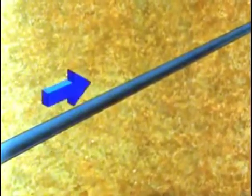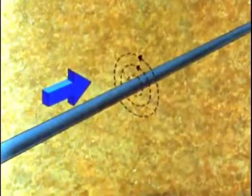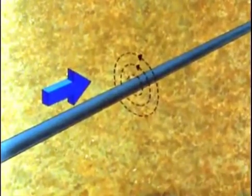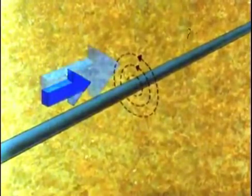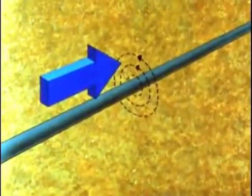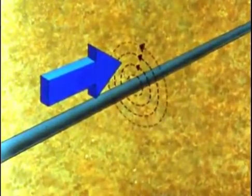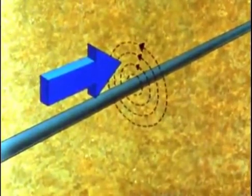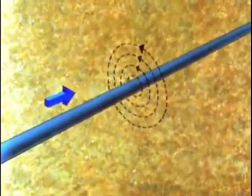Now you'll remember that a current flowing in a conductor always produces a magnetic field. In the case of a straight wire, the lines of force encircle it. If the current increases, the magnetic field strength and the number of lines of force will also increase. If the current decreases, the number of lines of force will decrease.